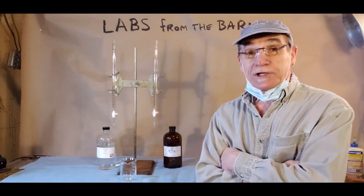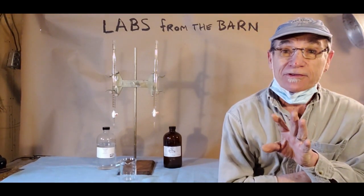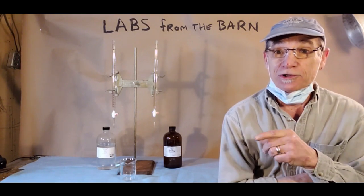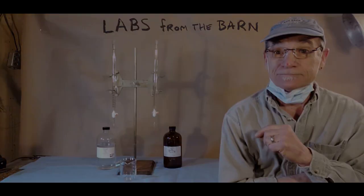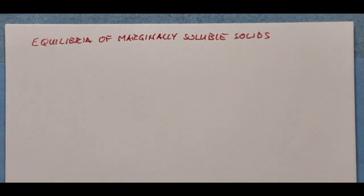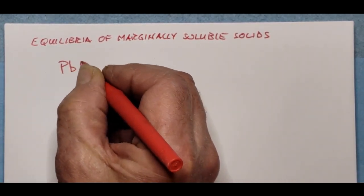The first thing we need to do is discuss a little bit about the background of KSPs. To start our discussion of the equilibria of marginally soluble solids, let's pick an example of something that for a long time we considered to be completely insoluble in water — and that was lead fluoride.